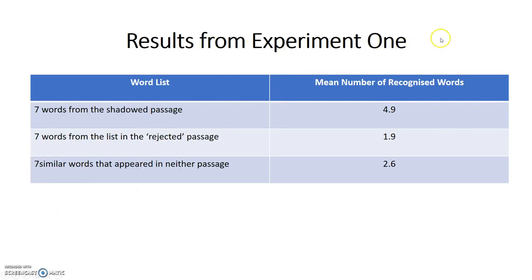Here are the results from experiment one. For the seven words from the shadowed passage, 4.9 on average were recognised out of seven, which was pretty good. However, for the rejected passage, people only recognised 1.9 words on average, suggesting they were not perceiving it while shadowing the attended message. This was actually lower than the control condition, where seven similar words not in either passage were used, which scored 2.6.